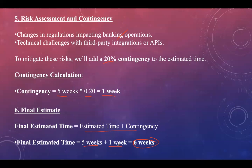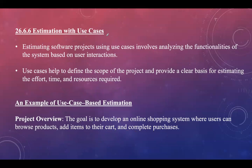Another estimation type is use case-based estimation. We've seen product-based, process-based, and function point estimation; now we look at use case estimation. Estimating software projects using use cases involves analyzing system functionalities based on how users interact with the system. Use cases help define the project scope and provide a clear basis for estimating effort, time, and resources. For example, the goal is to develop an online shopping system where users can browse products, add items to their cart, and complete purchases — three modules total.